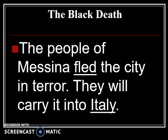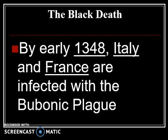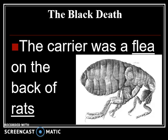People fled these cities and carried the plague into Italy, the Italian peninsula. By 1348, Italy and France were infected with the Bubonic Plague. Originally, and for quite some time, the carrier was a flea on the back of rats. The disease came from the rats — fleas would bite the rats, then bite people, and some of the diseased blood from the rats would go into the person's bloodstream. That's how it originally spread to humans.